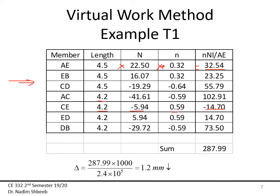I'm multiplying 4.5 times 22.5 times 0.32, and you get this value. As you've noticed, the negative I kept it, this is positive, so this value is negative, so I keep it. Then I do a summation and I add all these up, and it's giving me 287.99. My deflection is going to be 287.99 divided by EA times 1000 to transfer that into millimeters. I'm getting a positive value of 1.2 millimeters, which means the direction that I chose for my virtual system was correct.